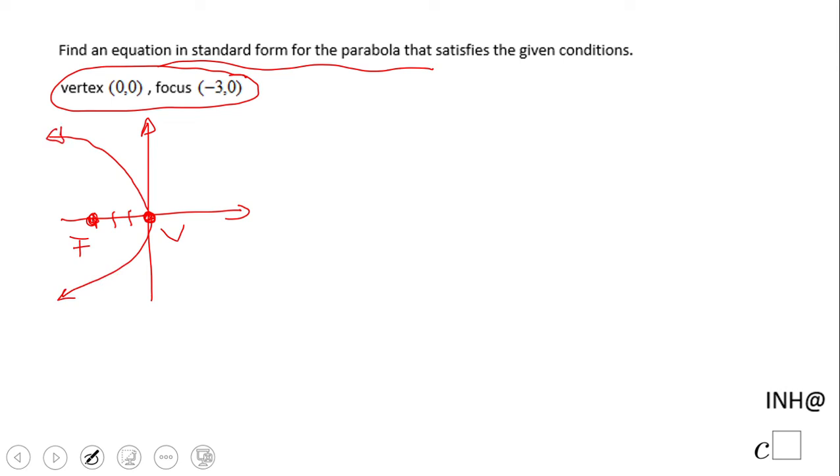This means we're going to have y squared equals negative four times c, which is three, times x.